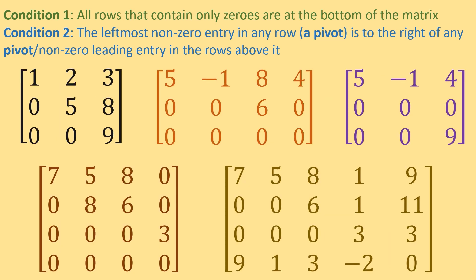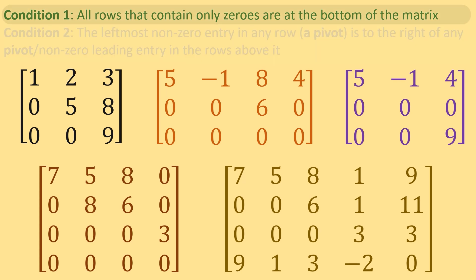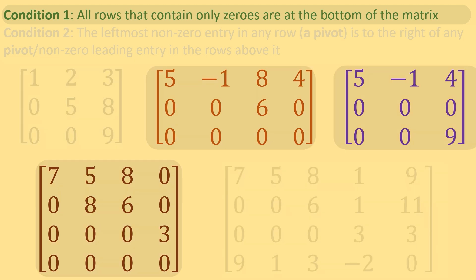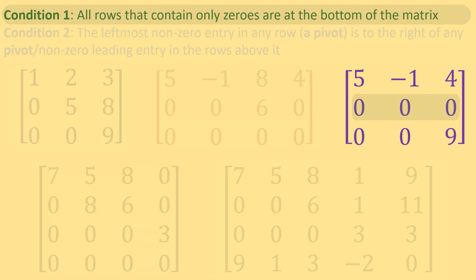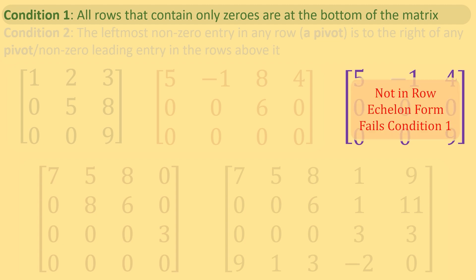Let's look at five matrices and determine if they are in row echelon form. Please pause if you need to, because we are hopping right into classifying them. First, let's focus on the first condition: all zero rows must be at the bottom. These three matrices have rows of all zeros. The matrix in the top right corner has a full zero row above a non-zero row, so it is not in row echelon form.